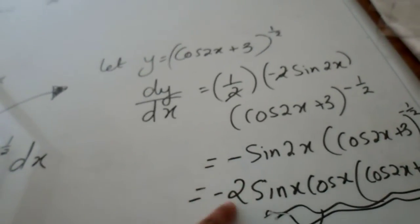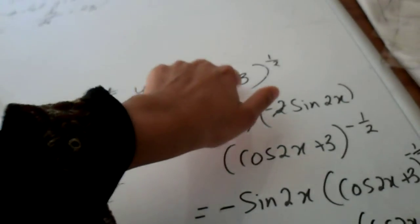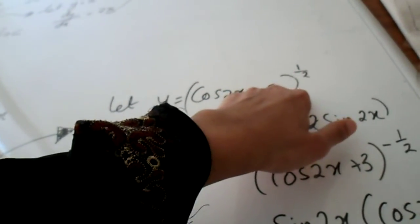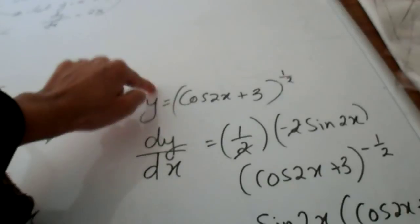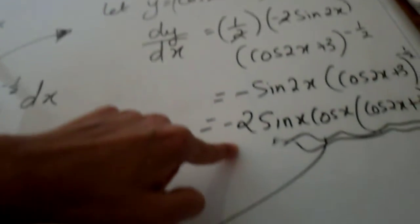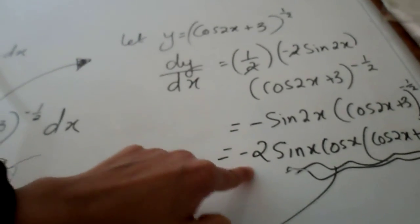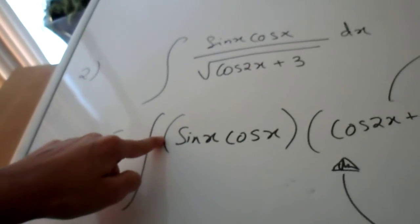So if you integrate this without the minus 2 you'd still get cos 2x plus 3 to the power of half but don't forget to put a minus half so that it can eliminate the minus 2 which is here to get a 1 which is what we require in the question.